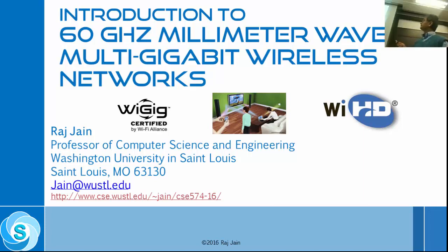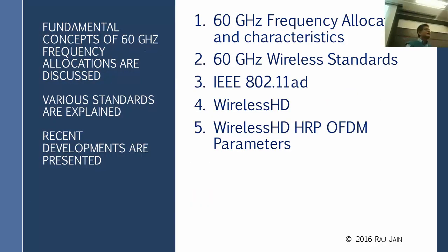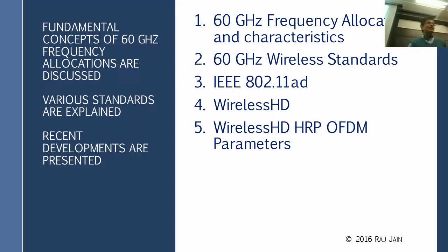This module is about 60 gigahertz millimeter wave. There are two logos here: WiGig and WiHD. We'll talk about those two, along with a picture of people doing very high speed transmission to their TV and playing games at very high speed. We will cover the 60 gigahertz frequency allocation, standards 802.11ad and WirelessHD, and take a trip through the OFDM parameters so you understand how to read them, because similar parameters appear in LTE and other technologies.